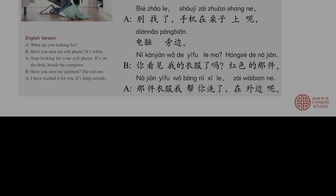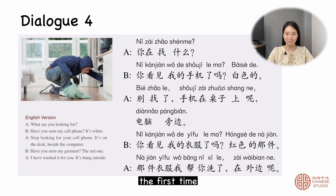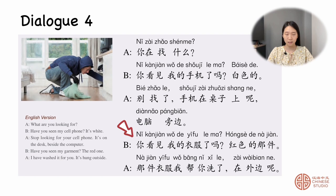Dialogue 4, the first time. 你在找什么？你看见我的手机了吗？白色的。别找了，手机在桌子上呢，电脑旁边。你看见我的衣服了吗？红色的那件。那件衣服我帮你洗了，在外边了。